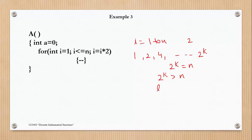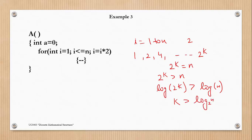Taking log of both sides, we get log(2^k) greater than log(n), which gives k greater than log n base 2. So there will be log n base 2 iterations, because we assumed there are k iterations in this loop. Hence the time complexity of this algorithm is O(log n base 2).